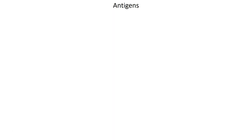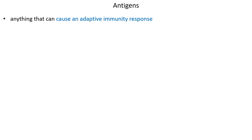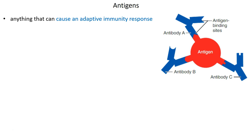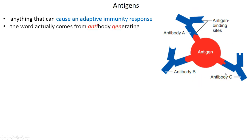This system is primed through exposure to antigens. Anything that can cause an adaptive immunity response is an antigen, and antigens are bound by antibodies — they are things that antibodies can bind to. A single complex antigen could be bound by many different antibodies. The word antigen is actually a conjunction of antibody generating, so antigens cause antibodies to be made, and those antibodies will bind directly to the antigen.